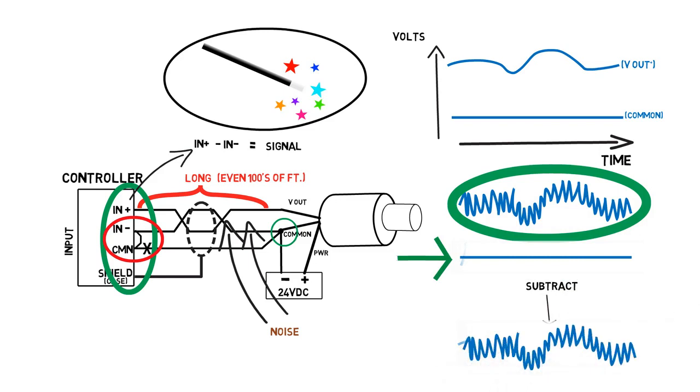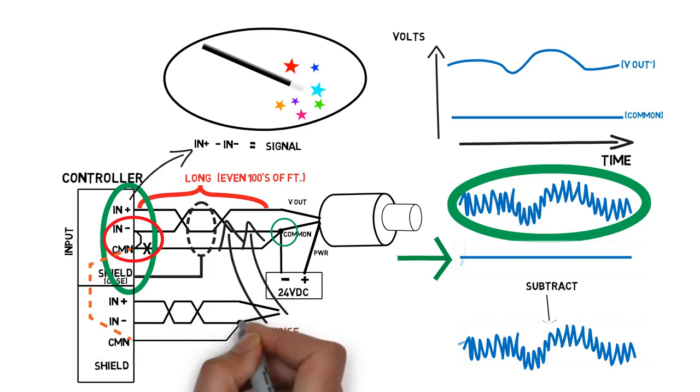If you have multiple inputs, beware of ground loops. For example, if this controller has multiple inputs that share a common internally, and we connect another device in the same way, we will have a ground loop that can generate noise.